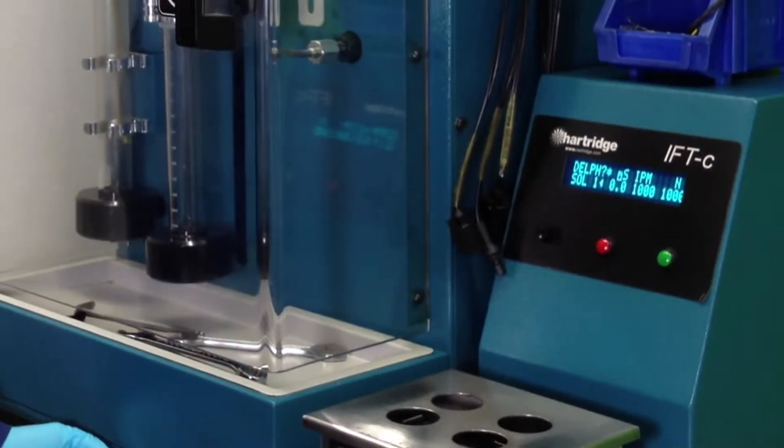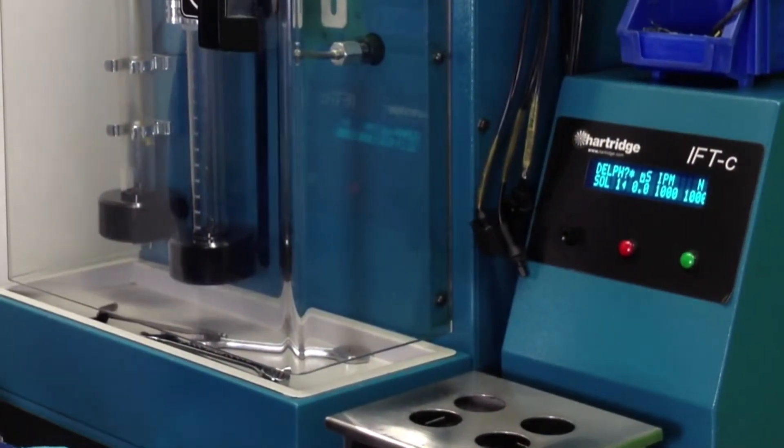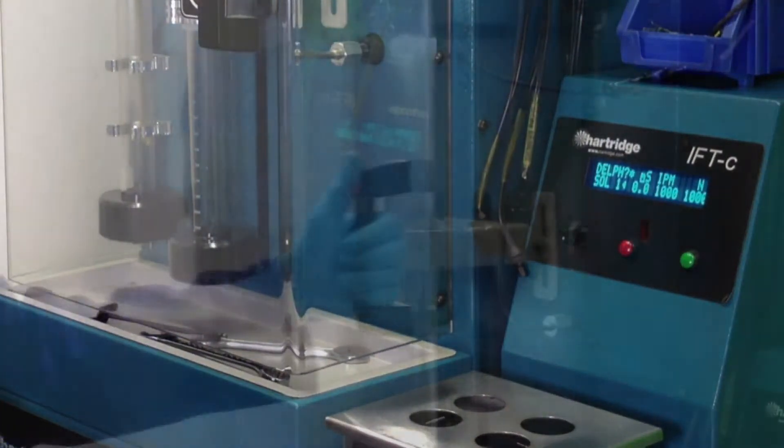Firstly, we set the tester to the correct pulse width and rail pressure and the shot counter to 1000.